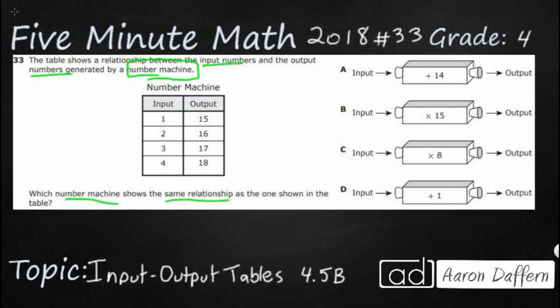Our inputs are 1, 2, 3, 4 — just going up by 1. Our outputs are 15, 16, 17, 18 — also going up by 1. But when we look at input-output tables, we don't necessarily look up and down. We look side to side, because that's where our input and our output is.